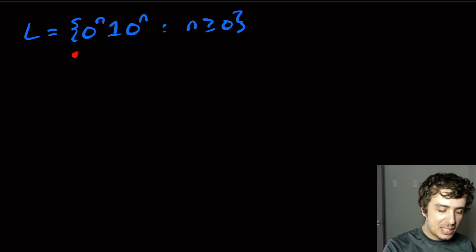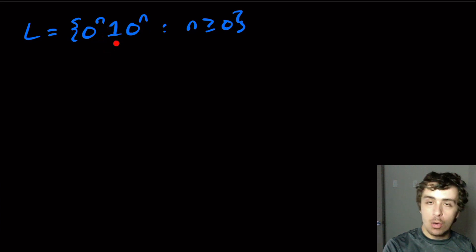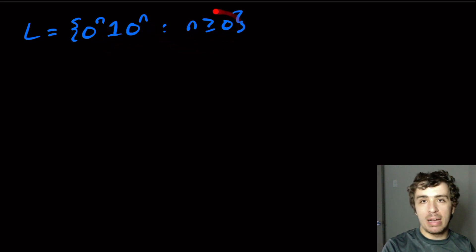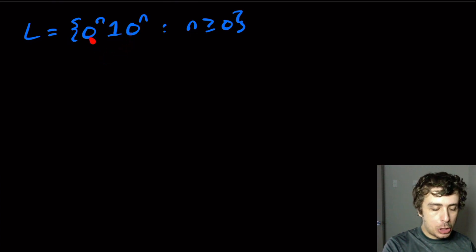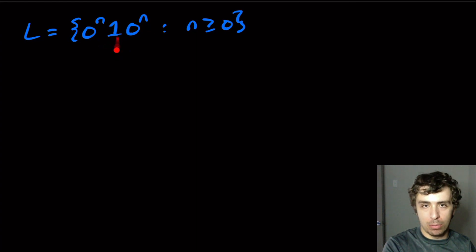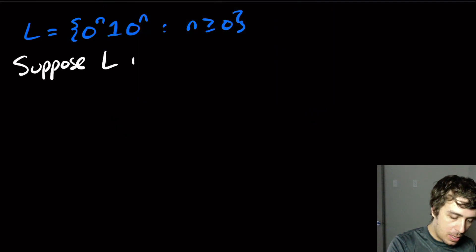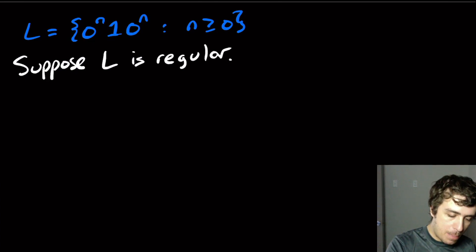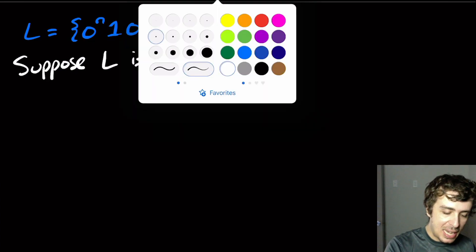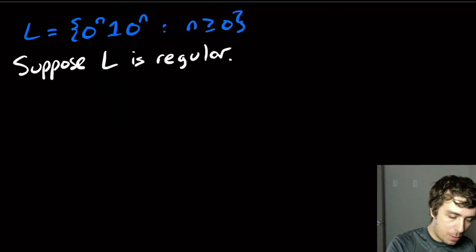Let's prove that the language L, which is all strings of the form 0^n 1 0^n where n is any number at least 0, is not regular. Here, the two halves of the string have to be exactly the same with one separator in between. So let's suppose that L is regular; then by the pumping lemma, there exists a pumping constant P for L.